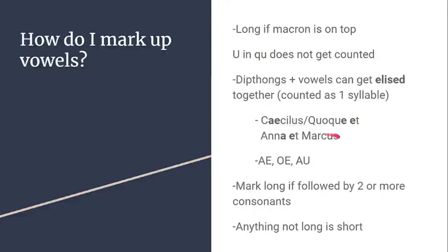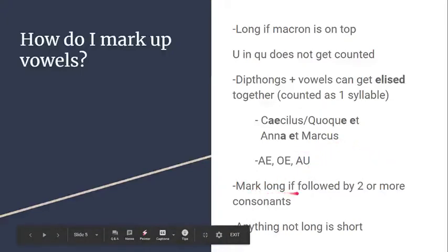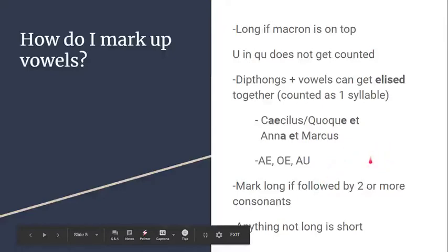Some diphthongs that can be elided are AE (sounding like 'I'), OE (sounding like 'MOI'), and AU. Another key rule: a vowel is marked long if it is followed by two or more consonants. Anything not marked long is short. So if you have a long sound, two blank spots, then another long, you know those blanks are going to be short-short.